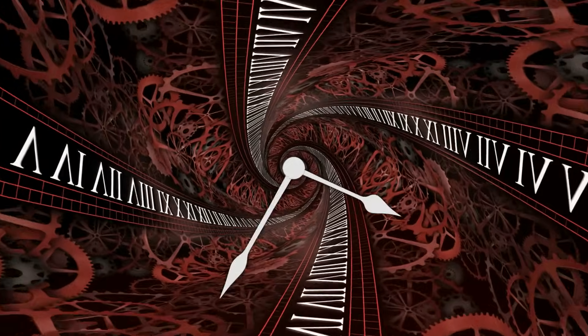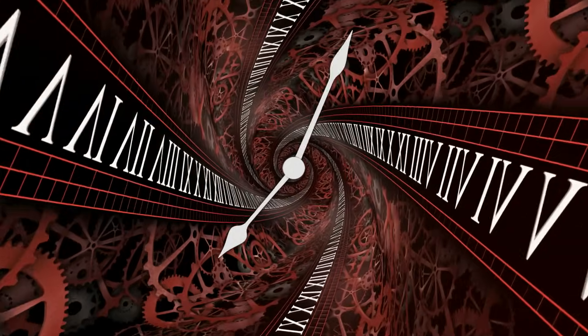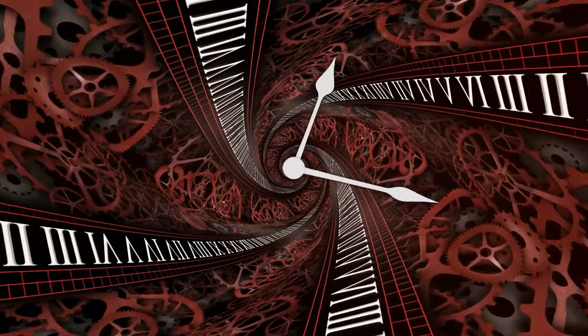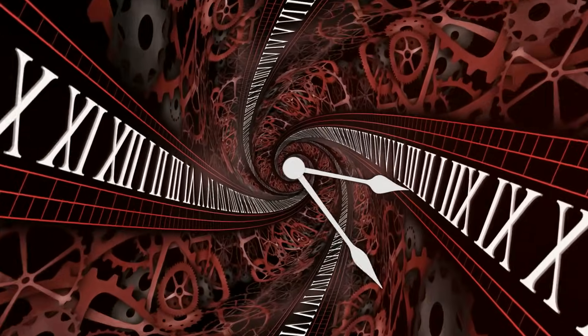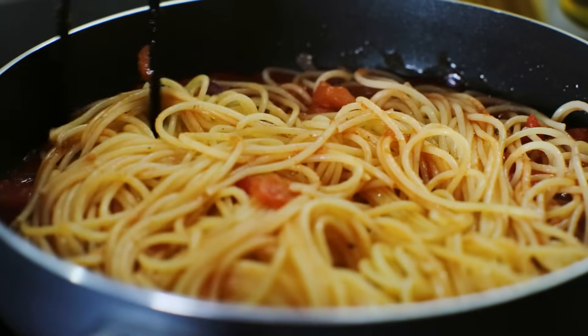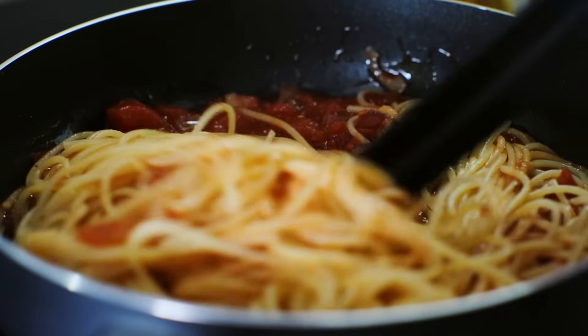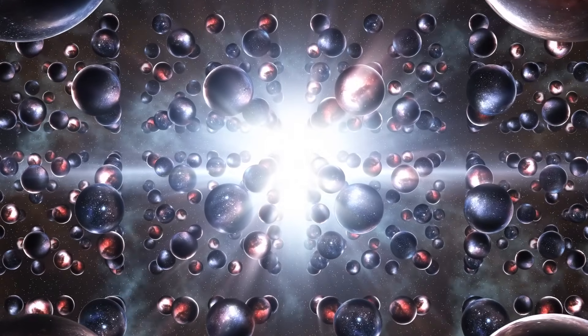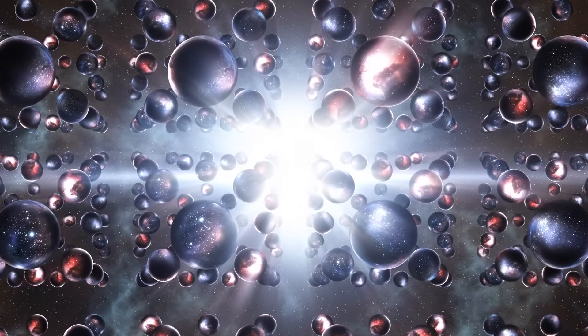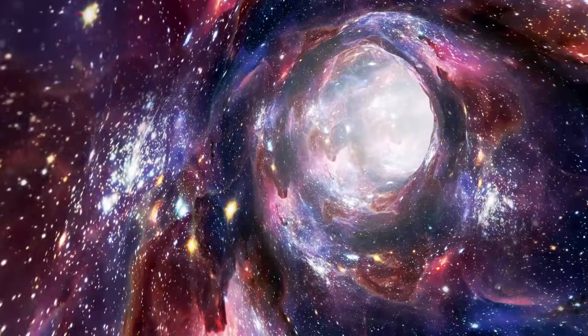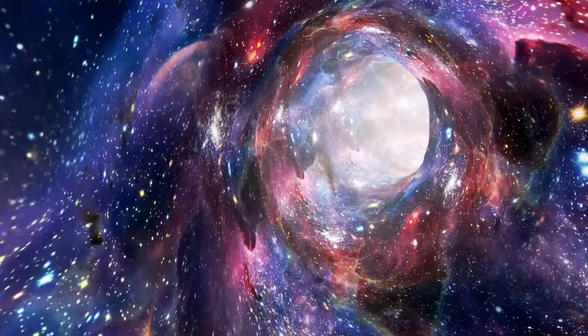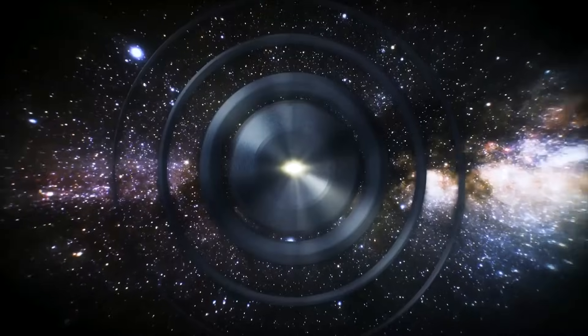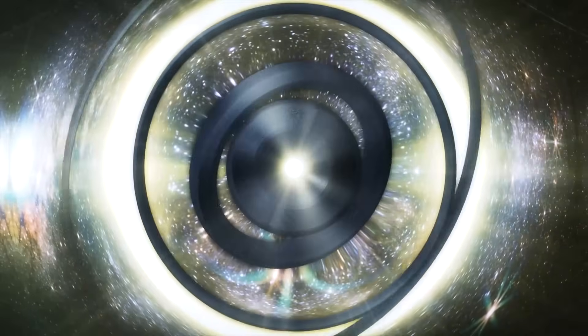But wait, there's more. What if instead of a single predetermined future, there are multiple possible futures? This idea ties into quantum mechanics, which suggests that at the tiniest scales, the universe is inherently probabilistic. Maybe the future isn't a single slice of the cosmic bread loaf, but more like a bunch of tangled spaghetti strands, each representing a different possible outcome. This multiverse idea isn't just science fiction, it's a serious scientific theory that attempts to explain some of the weirdest aspects of quantum mechanics. According to this view, every time a quantum event could have multiple outcomes, the universe splits into parallel realities, where each outcome occurs. So in a sense, all possible futures are happening, we only just experience one of them.